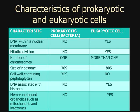Here I've provided a graph. On the top banner on the left-hand side it says 'characteristics,' directly to the right is 'prokaryotic cell,' also known as bacteria, and to the right of that is 'eukaryotic cell.' I'm going to cover seven types of characteristics: DNA with a nuclear membrane, mitotic division, number of chromosomes, size of ribosome, cell wall containing peptidoglycan, DNA associated with histones, and membrane-bound organelles such as mitochondria, lysosomes, etc.